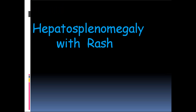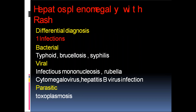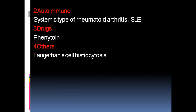If there is a rash associated with hepatosplenomegaly, differential diagnoses include: bacterial infections — typhoid with rose spots, brucellosis, syphilis; viral — infectious mononucleosis from Epstein-Barr virus, rubella, cytomegalovirus, hepatitis B virus infection; parasitic — toxoplasmosis; autoimmune — systemic rheumatoid arthritis, SLE; drugs — phenytoin; and others — Langerhans cell histiocytosis.